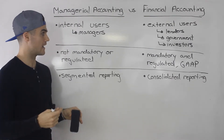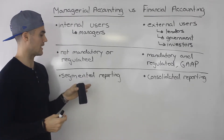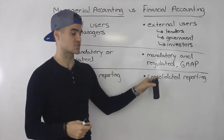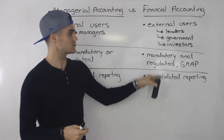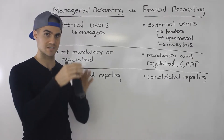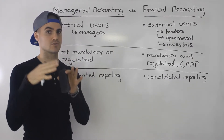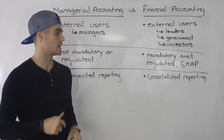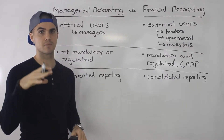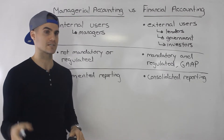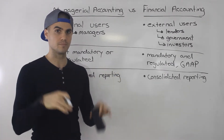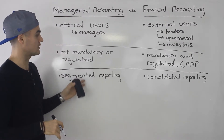The different types of reporting: managerial accounting has segmented reporting and financial accounting has consolidated reporting. Financial accounting may have some segmented reporting too — you may see financial statements split up into countries or regions — but the main balance sheet, the main income statement, and the main statement of cash flows in a company's 10K is going to be consolidated, for the company as a whole.